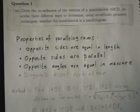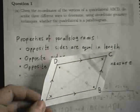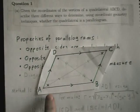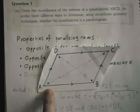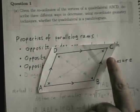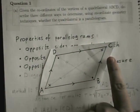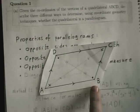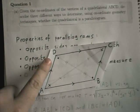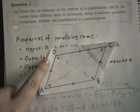Thirdly, opposite angles are equal in measure. So in our diagram, angle DAB is the same in measure as angle DCB, and angle ABC is equal to angle ADC.